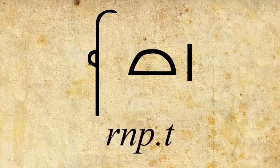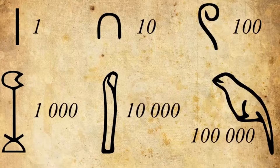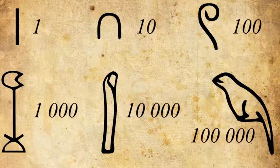Egyptians did not know the zero, and this forced them to use a different symbol for each power of ten and repeat these symbols as many times as needed. For units they were represented by vertical lines, tens by a basket handle, hundreds by a rope, thousands by a lotus, tens of thousands by one finger, and hundreds of thousands by this type of lizard.